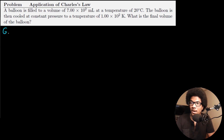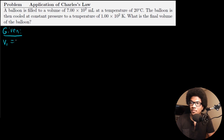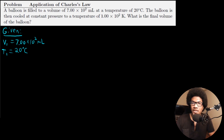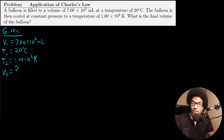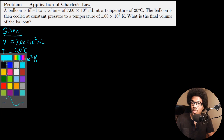Let's chart out what we've been given. V1, the initial volume, is 7 × 10² milliliters. The initial temperature T1 is 20 degrees Celsius, and the final temperature T2 is 1 × 10² Kelvin. We're solving for V2. We have a mismatch between our two temperatures — T1 is in Celsius and T2 is in Kelvin — so we need to fix that.